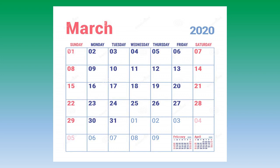March is the third month of the year and it is spring time. You can see flowers blooming all around and this month is also known for the festival of colors.